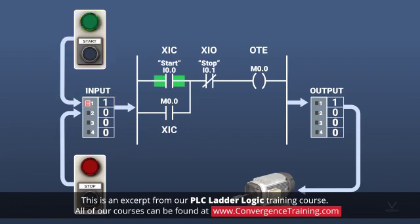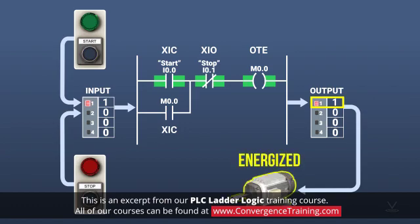The second instruction is an XIO. Since this data bit comes from a normally open stop switch, which has not been pressed, the N2 data value will be 0, and that instruction will also evaluate as true. Because both of the upstream conditions on the rung evaluate as true, the final instruction on the rung also becomes true, which translates into an output data value of 1 and a running motor.